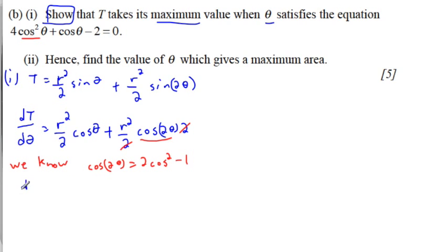So dT d theta is equal to r squared over 2 cos theta, plus r squared. Now I'm going to replace this with 2 cosine squared, subtract 1.